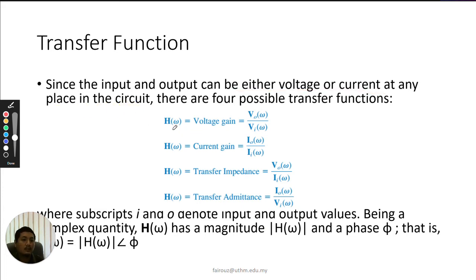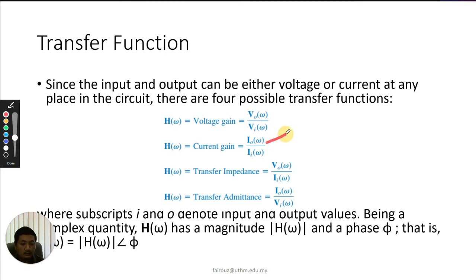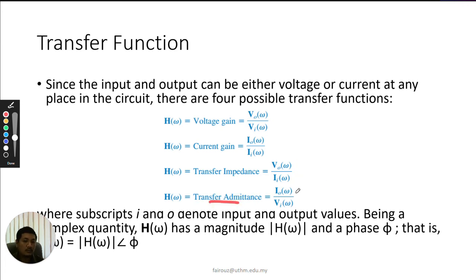There are four possible transfer functions. The voltage gain is output voltage over input voltage. The current gain is the ratio of output current over input current. The transfer impedance is the ratio of output voltage over input current. Admittance is the ratio of output current over input voltage.